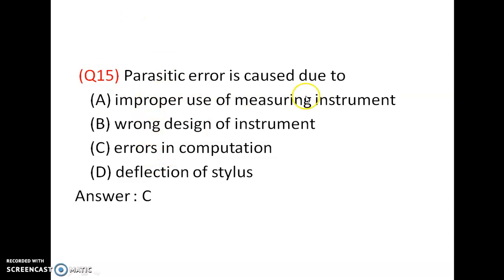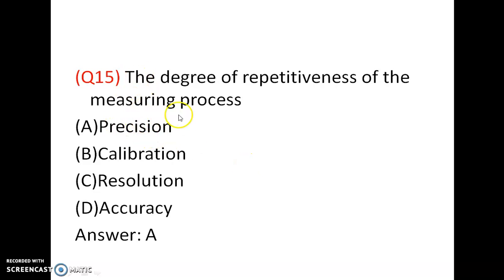The parasitic error is caused due to errors in computation — the error caused due to computation or theoretical calculations is called parasitic error. Once identified, it can be eliminated. The degree of repetitiveness of the measuring process is precision.